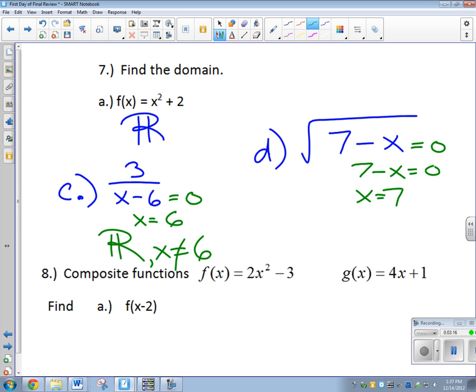If I plug seven into my problem, seven minus seven, and then I take the square root of that, what do I get? Zero. Seven minus seven is zero. Square root of zero is zero. Is taking the square root of zero okay? Yeah. That's fine. So seven's fine.